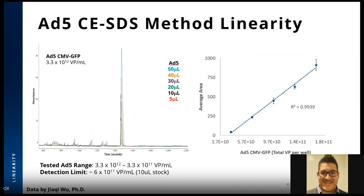We tested the adenovirus CESDS method linearity. Using adenovirus 5 stock at 3×10¹² VP/mL, we independently precipitated 50, 40, 30, 20, 10, or 5 microliters of virus, equating to a test range from 3×10¹² down to 3×10¹¹ VP/mL. Linearity is based on the average peak area of the hexon protein in the top five samples, as the 5-microliter sample was at the noise of the method. We can detect as little as 1.6×10⁹ total viral particles per well, or around 6×10¹¹ VP/mL, which is about 10 microliters of stock.